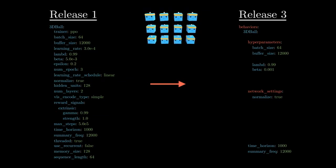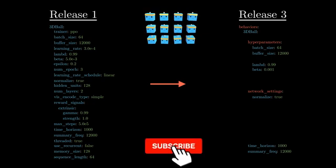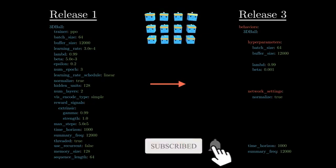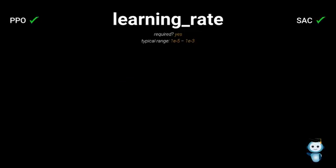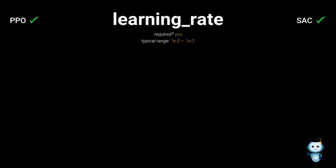Like in the video before, I'll stick with the config from Release 1 to keep it consistent. The way the parameters work hasn't changed at all, and that's what you're going to learn here. So let's get started with parameters that are available for both PPO and SAC. First one being the learning rate.